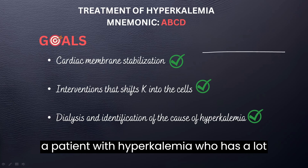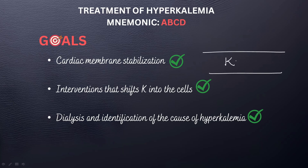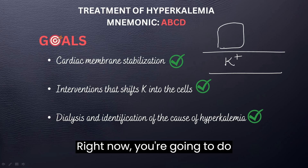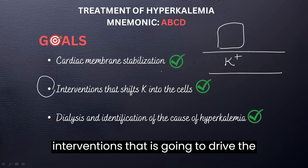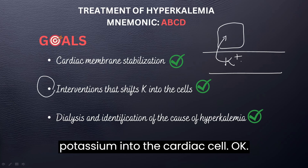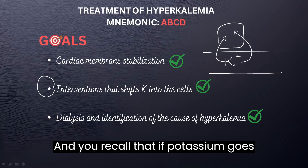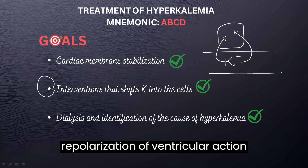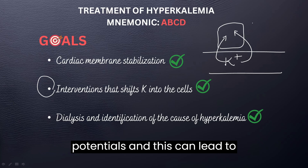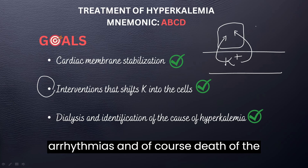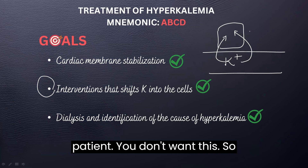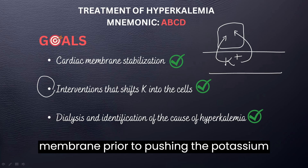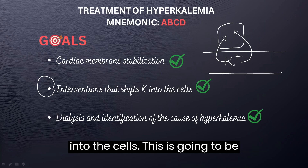Imagine a patient with hyperkalemia who has a lot of potassium in the blood, and here we have a cardiac cell. You're going to do interventions that are going to drive the potassium into the cardiac cell. And you recall that if potassium goes into the cells, that can lead to action potentials, that can lead to problems with repolarization of ventricular action potentials. And this can lead to arrhythmias and, of course, death of the patient. You don't want this. So you want to prepare and stabilize the cardiac membrane prior to pushing the potassium into the cells.